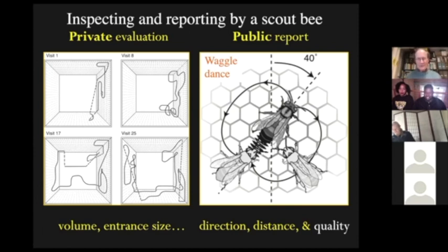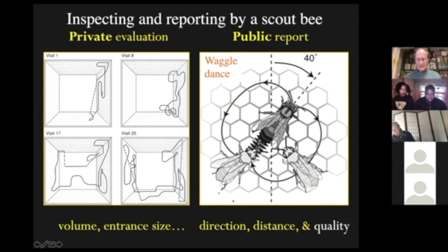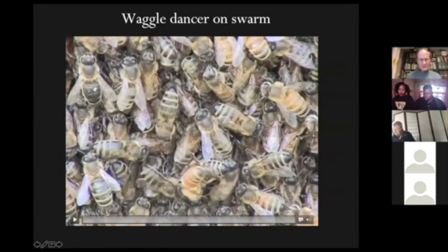Scout bee has poked around, found a potential home site. If she likes it, she'll come back and do a waggle dance to advertise it. The waggle dance is performed on the surface of the swarm cluster. When bees do a waggle dance, they indicate the direction and distance to something — either a patch of flowers or in this case a new home site. But they also indicate the quality of that target they're advertising, be it a flower patch or a potential home site.